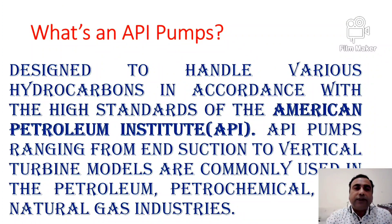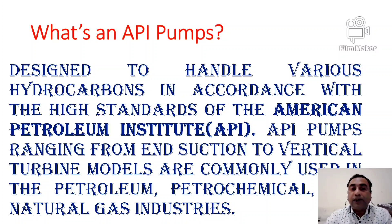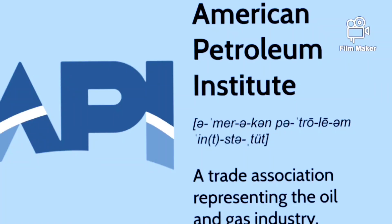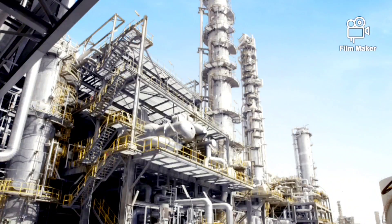What is an API pump? The question is often whether to buy API pumps or ISO pumps. API pumps are designed to handle various hydrocarbons in accordance with the high standards of the American Petroleum Institute. Ranging from end suction to vertical turbine models, they are commonly used in the petroleum, electrochemical and natural gas industries.